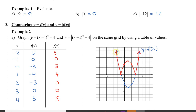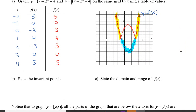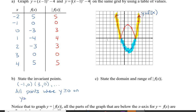The points highlighted in yellow are called invariant points because they stay the same from the original to the new graph. The bottom part, highlighted in blue, got reflected over the x-axis. When asked to state the invariant points, we have negative 1, 0 and 3, 0, and more. The invariant points are all the points where y is greater than or equal to 0 on the original graph y equals f of x.